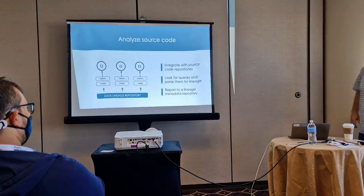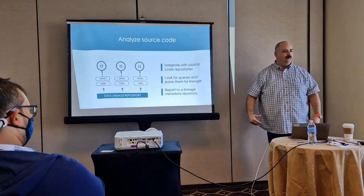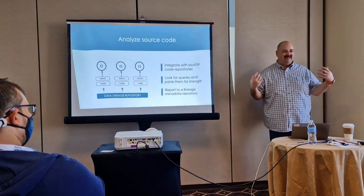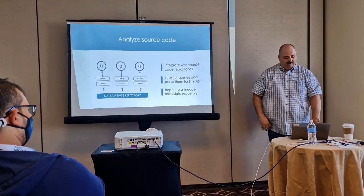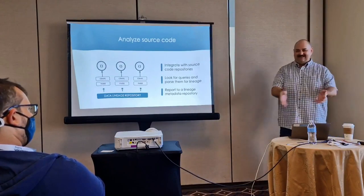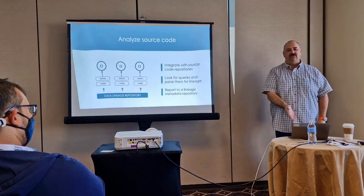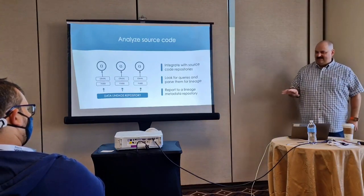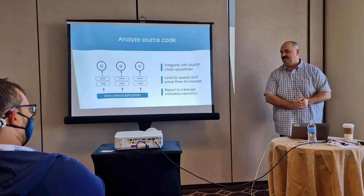Another tactic is analyzing source code. This is what a lot of traditional vendors are doing — looking at your source code repository, going through all your code, yanking out queries when they find them. It's like forward engineering: you're making up all the things that could potentially happen with all those queries and how they might relate to each other if they were all to run. This is great for design-time lineage, but you won't actually know if anything ran. Open Lineage was designed so that all of these tactics could be used and talk about lineage in the same way, sending the same metadata to a repository that understands all of it.